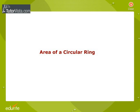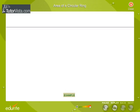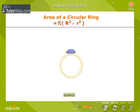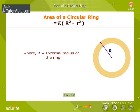Area of a circular ring is calculated using π(R² - r²), where capital R is the external radius and small r is the internal radius.